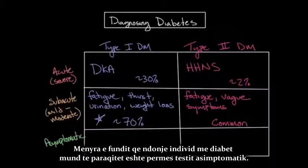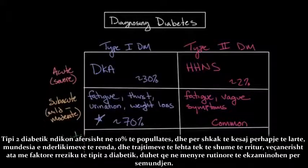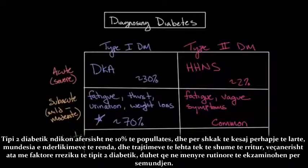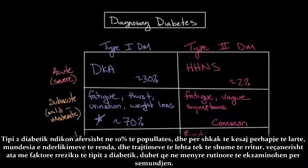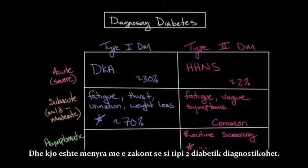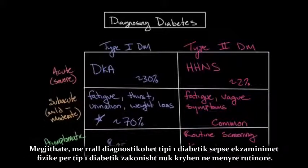The last way individuals with diabetes can present is through asymptomatic screening tests. Type two diabetes affects nearly 10% of the population, and due to this high prevalence, potentially severe complications, and relative ease of treatment, most adults — especially those with risk factors — should be routinely screened. This is the most common means by which type two diabetes is diagnosed. However, routine screening for type one diabetes is not usually performed, so this route is rare for type one.